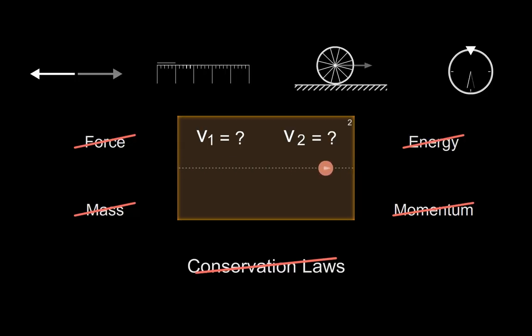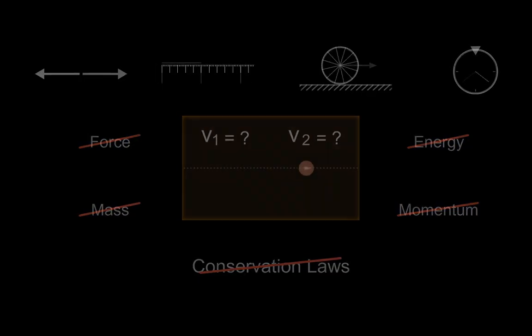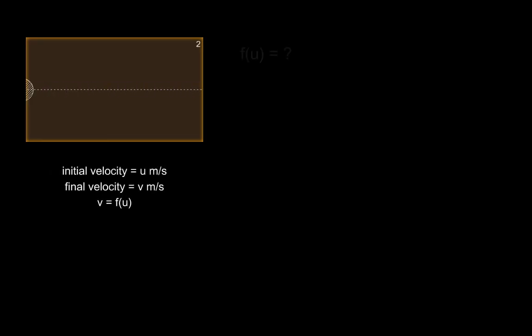We'll also recover a version of Newton's first law and the concept of mass in the process. Like any complex problem, let's start with the simplest variant first. Let's consider the behavior of a single point particle as it hits a wall in one dimension. Can we find the final velocity of the particle as some function of initial velocity, say f? Think of f as some law of physics that we are trying to find. If we can find some reasonable way to constrain it, we could get started.